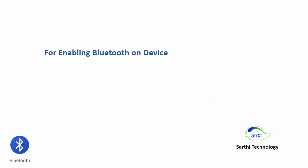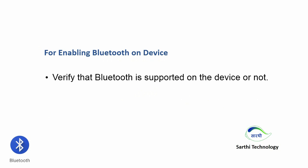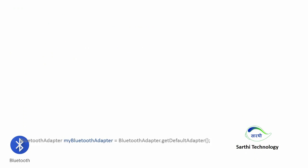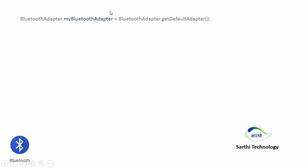For enabling Bluetooth on a device we will follow a few steps. First, verify that Bluetooth is supported on the device or not. If our device does not support Bluetooth then we can't do anything. But if the device supports Bluetooth, we will check whether Bluetooth is already enabled or not, because if it is already enabled there is no need to enable it again. If Bluetooth is not enabled, then we will enable it.